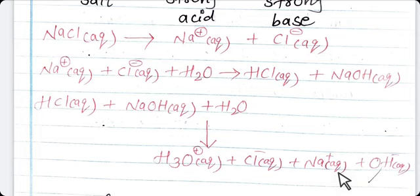The equality of H3O⁺ and OH⁻ — produced by ionization of water — is not disturbed, and the solution remains neutral. So always remember: salt of strong acid and strong base does not undergo hydrolysis, because Na⁺ and Cl⁻ ions do not react with water. No hydrolysis is carried out for these types of salt.